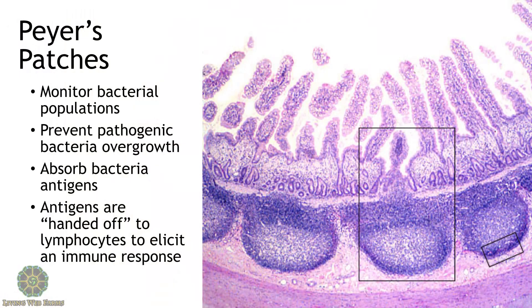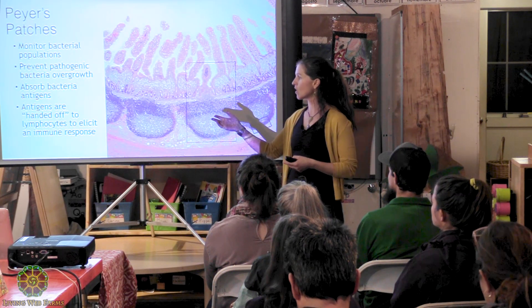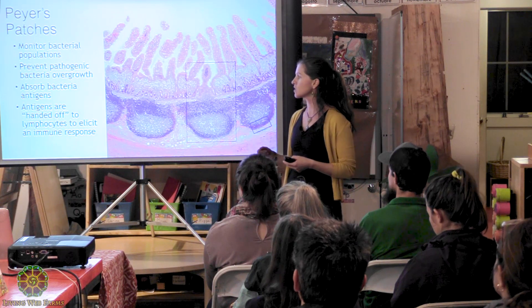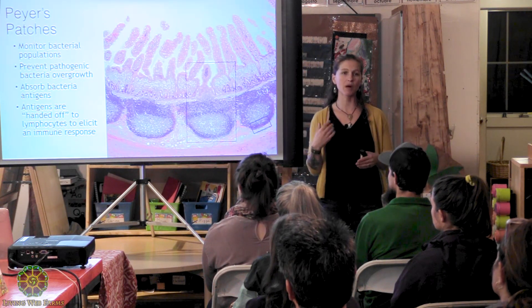Because these bacteria are producing certain compounds, these cells can determine whether or not something is a pathogen or something that should be here — whether to elicit a response. And then it can send the attack and hand off this bacteria to the lymphocytes in order to help control that population.